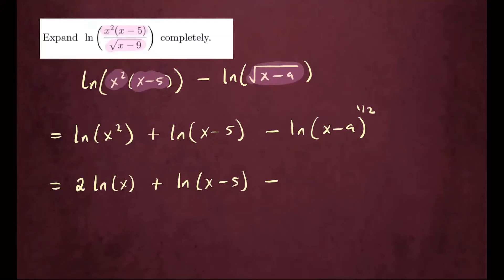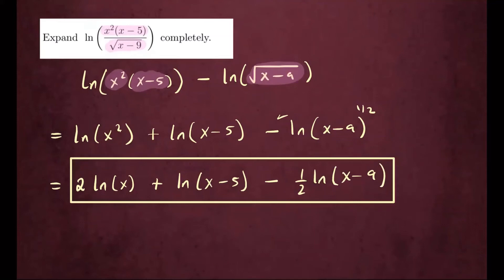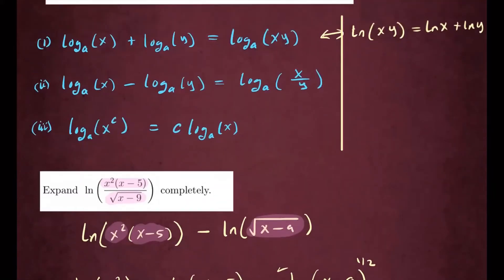Then minus, now here this can come to the front just like the first term, we will have one half times ln of x minus nine. And now this is completely expanded. We're able to expand by simply using these laws.